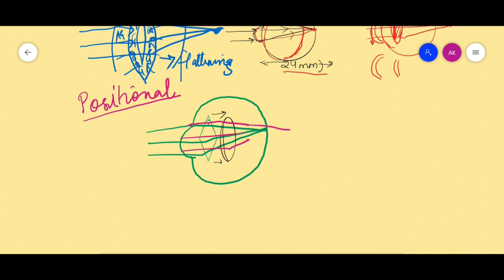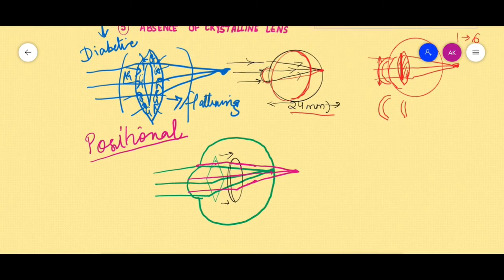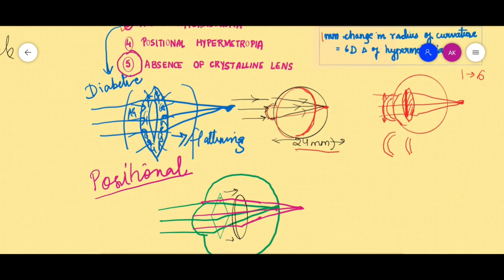And obviously the rays will converge behind the retina, behind from where they were converging if the lens was placed anteriorly. So very simple: if the lens is at normal position they are focusing on the retina; if the lens goes behind, the rays also get focused behind, and that causes the hypermetropia. So because the hypermetropia is occurring because of the change in the position of the lens, this is called positional hypermetropia. And finally, coming to